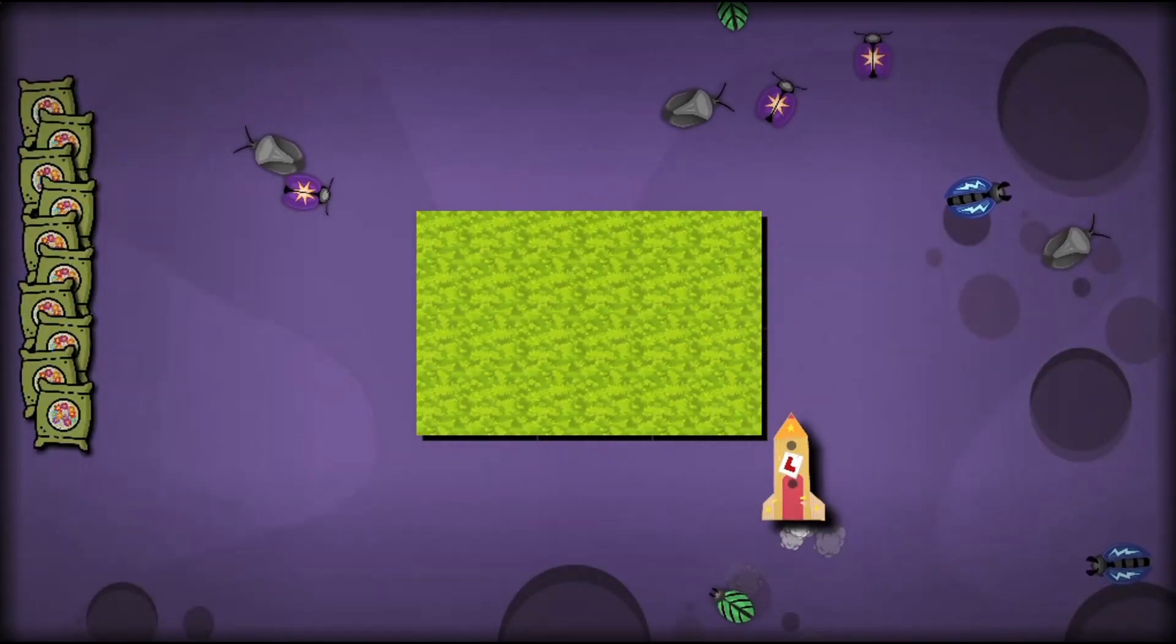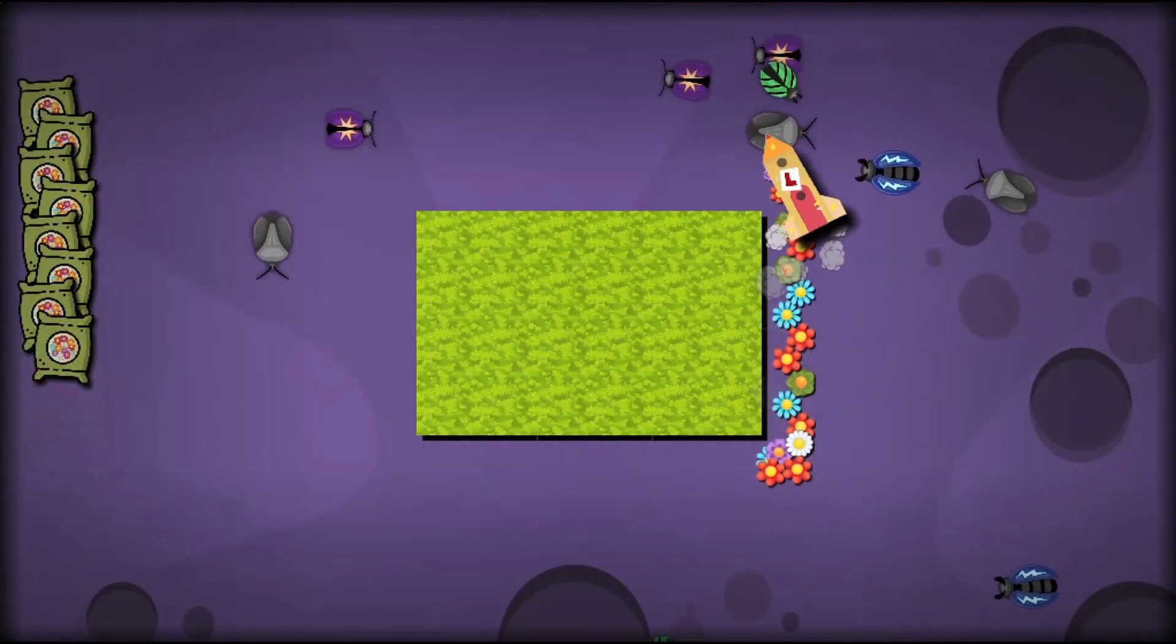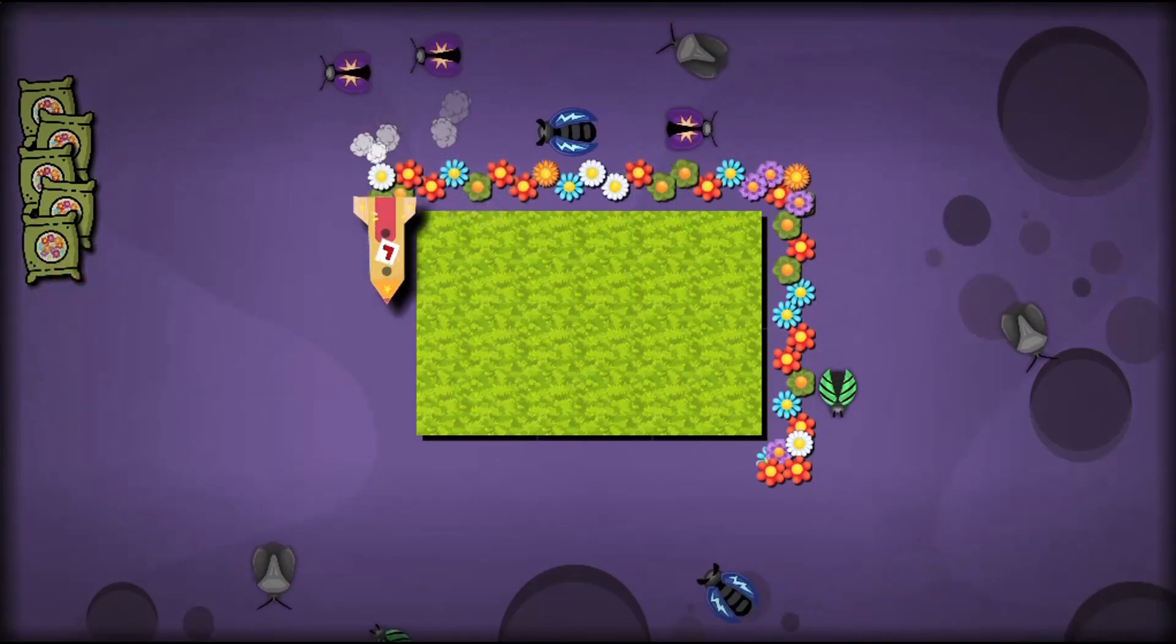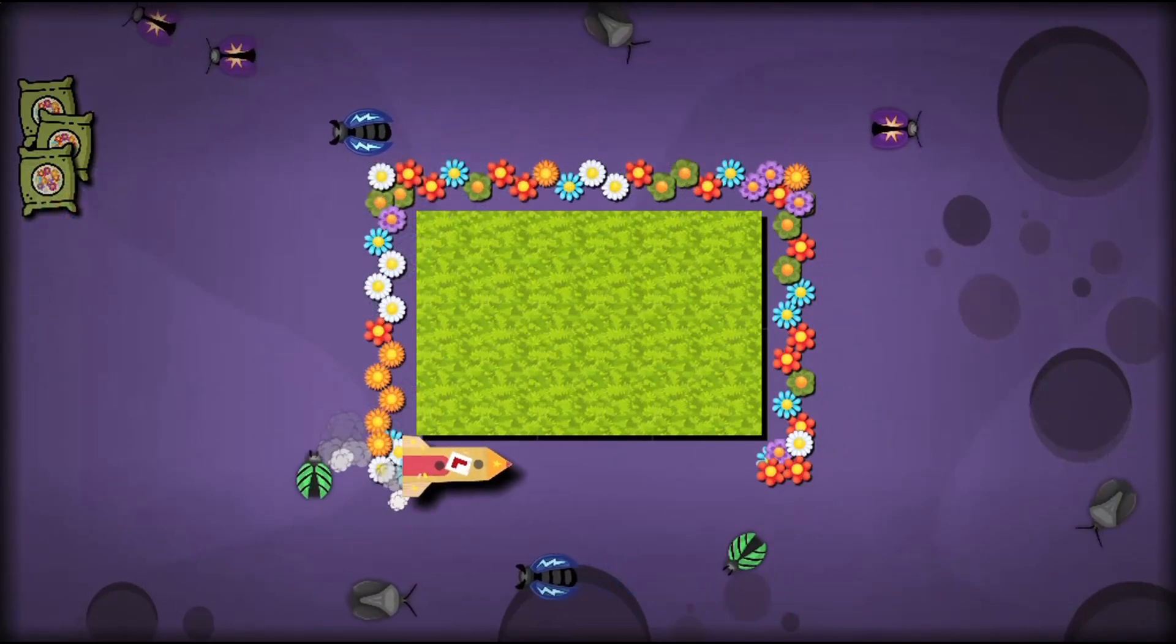Successfully planted borders earn the player an upgrade for their rocket. Become the fastest and win an intergalactic travel ticket to see your parents.